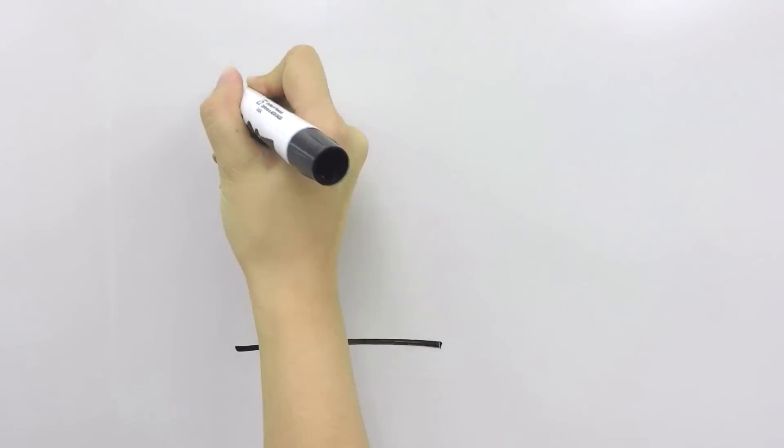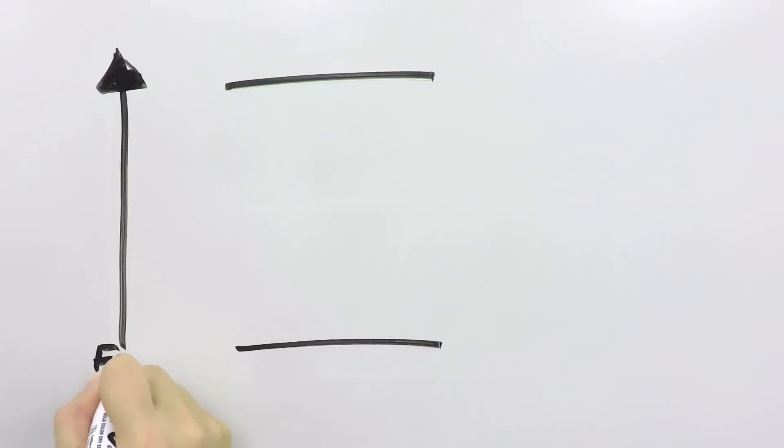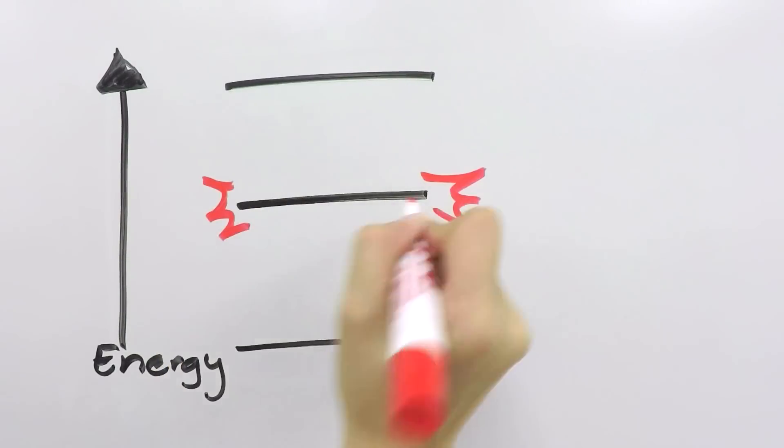So, how does this work? The key is that in upconverting materials, there is a resting spot for excited state electrons, what's called a metastable intermediate state.